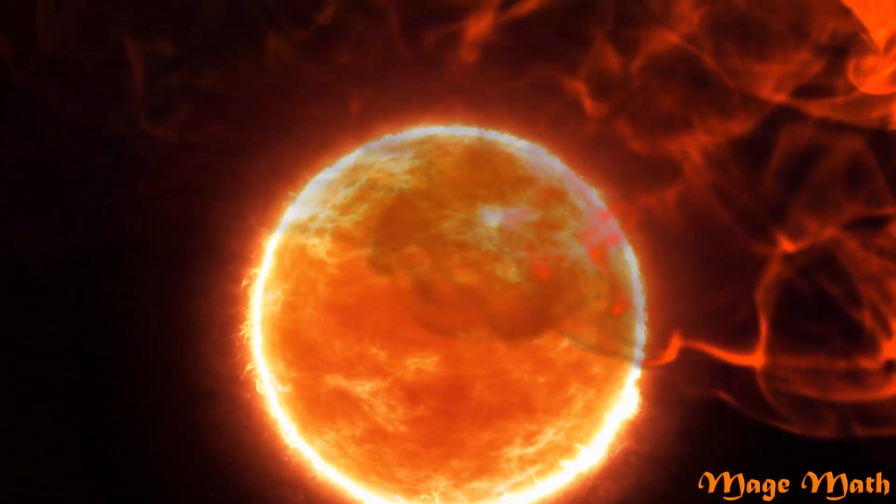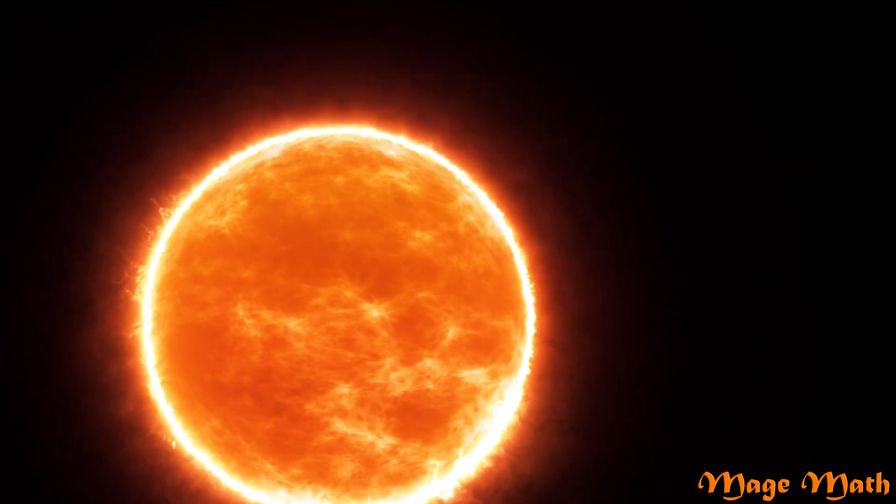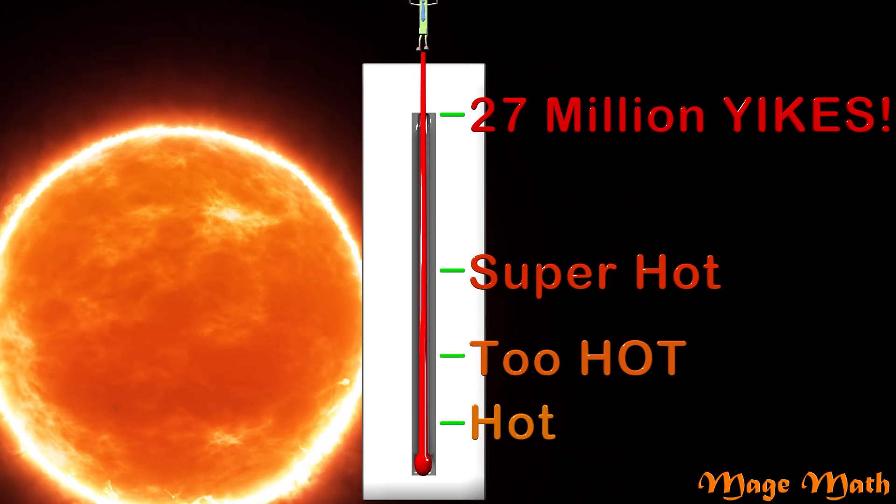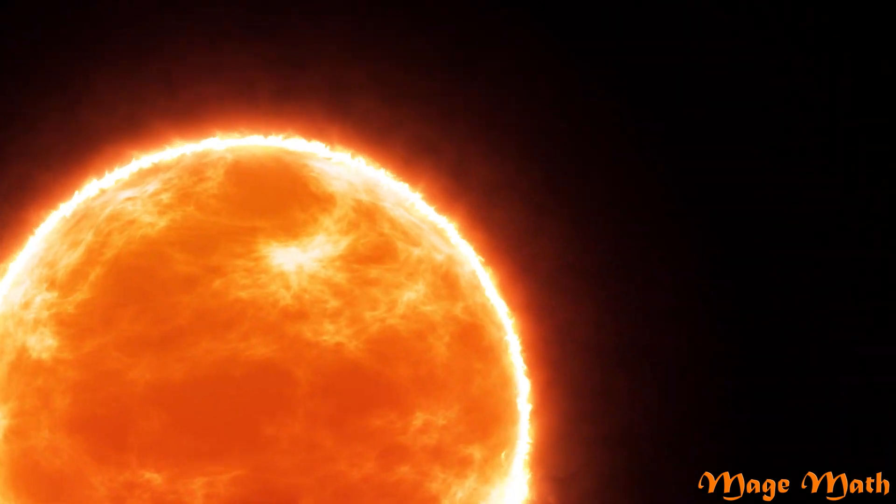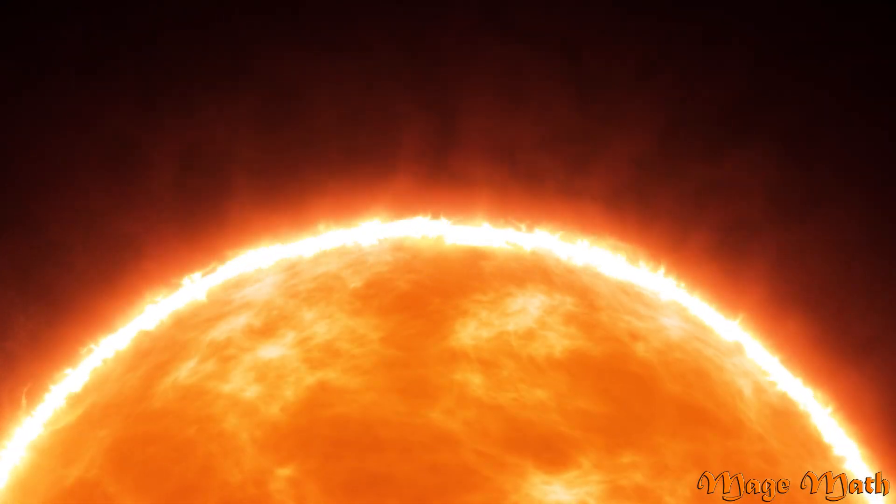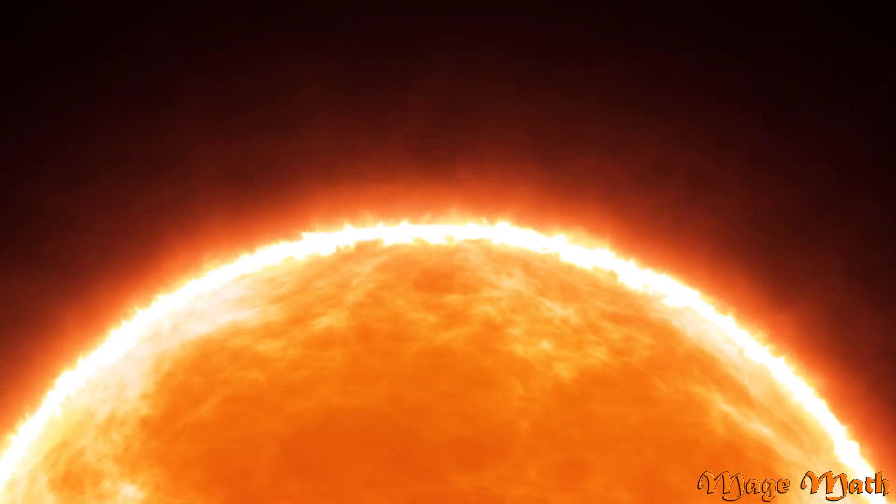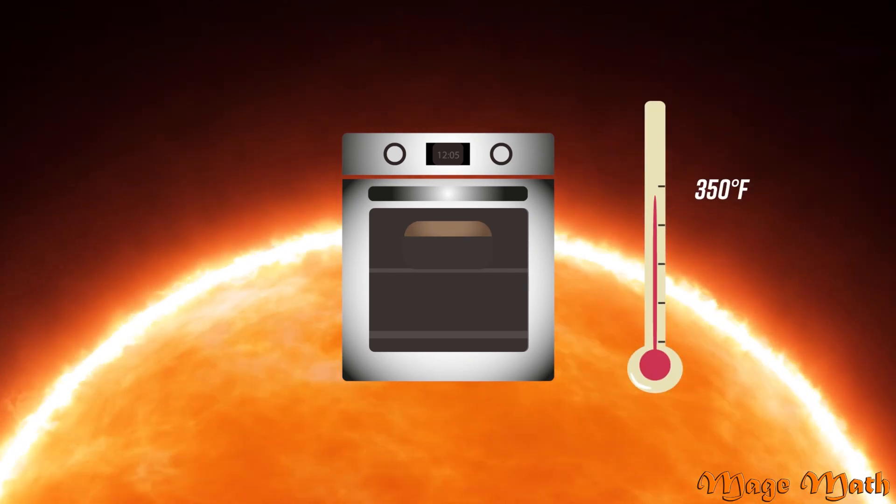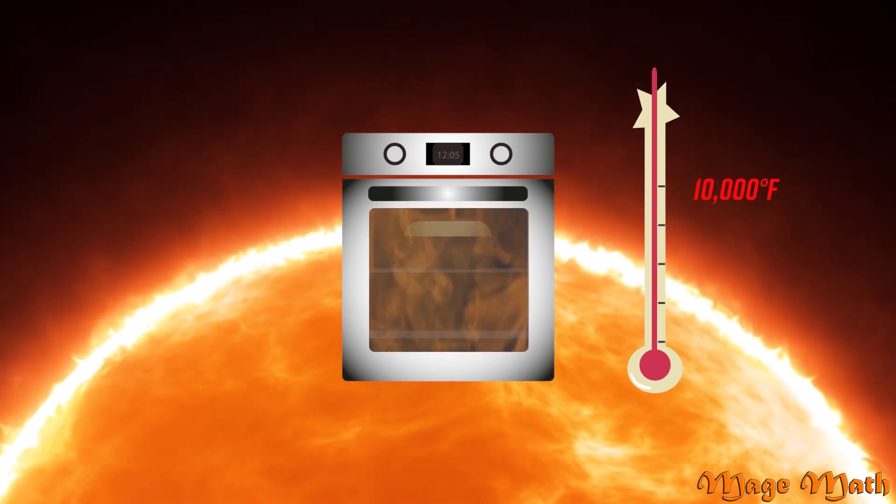Not only is the sun mostly made of hydrogen, but it is extremely hot. The sun is so hot that at the center of the sun, it can get over 27 million degrees Fahrenheit. On the surface of the sun, it gets over 10,000 degrees Fahrenheit. That is crazy hot. To give you an idea of how hot that is, I baked a cake the other day, and the oven was set to 350 degrees Fahrenheit. The sun is a lot hotter than my oven, that is for sure.